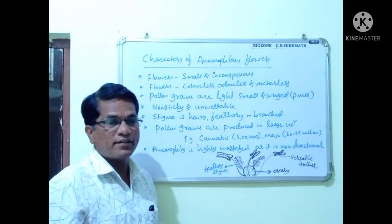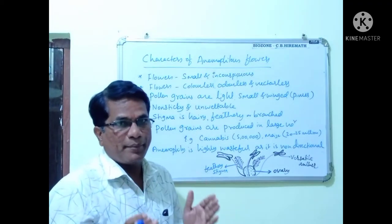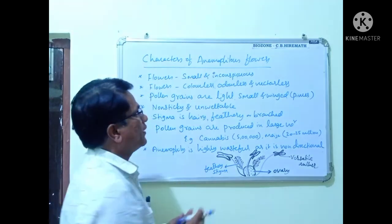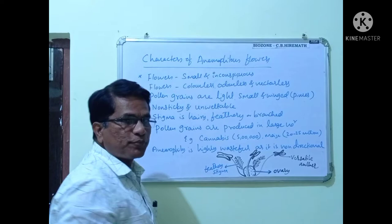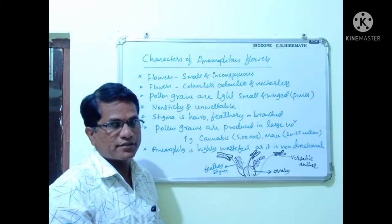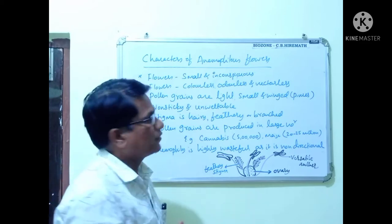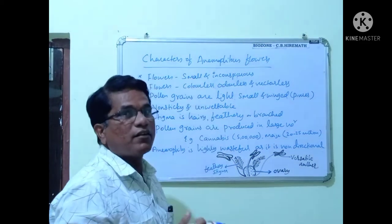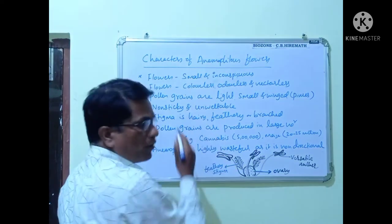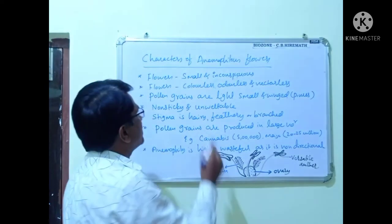Let us discuss the characteristics of anemophilous flowers. Once again, pollination occurs by wind is called anemophily. First, flowers are small and inconspicuous, means not attractive, because wind is an abiotic agent.